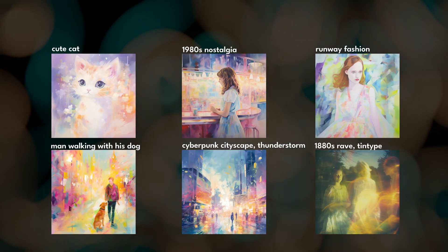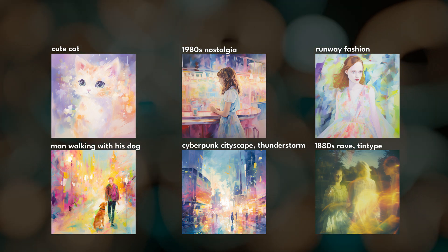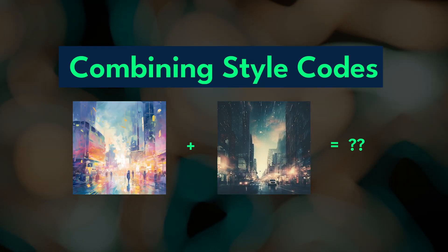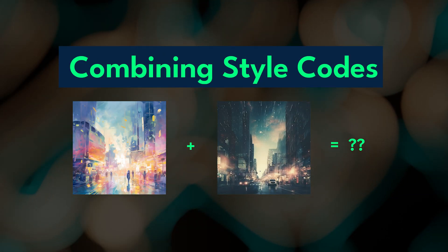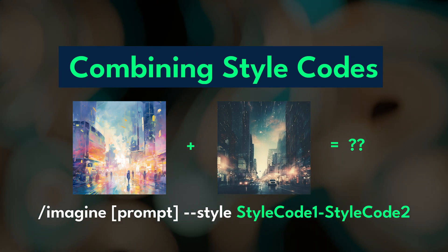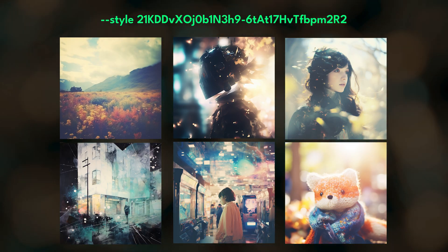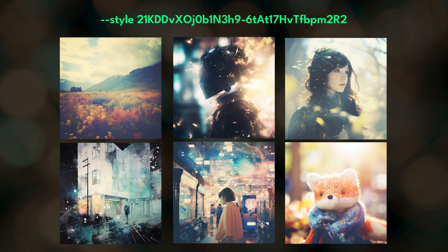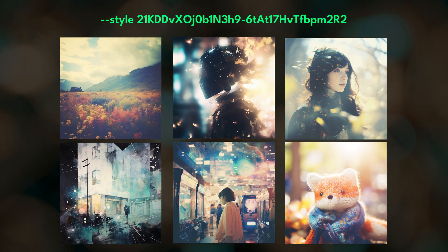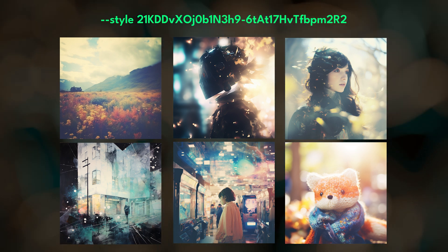To me, this style code seems fairly portable, at least with these examples. You can also combine style codes to create some really unique styles. To do this, just separate your style codes with a dash. I combined our pastel neon impressionism style code with a style code that I created for sci-fi nostalgia film, and here are some of the images that I got.